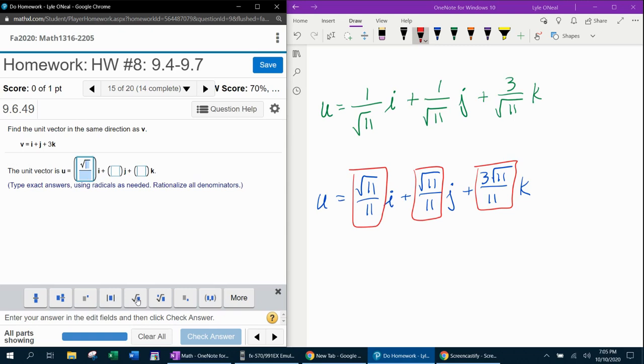Fraction, square root, 11 over 11. Fraction, same thing, square root, 11 over 11. And then for the last fraction, we've got 3 square root of 11 over 11.